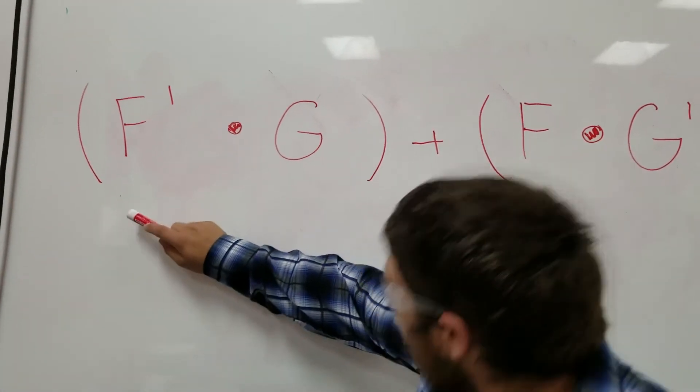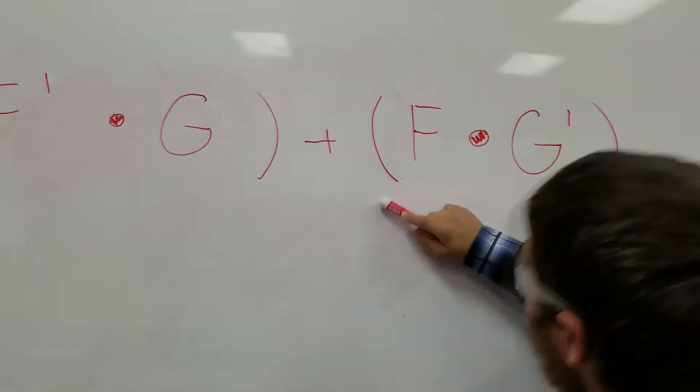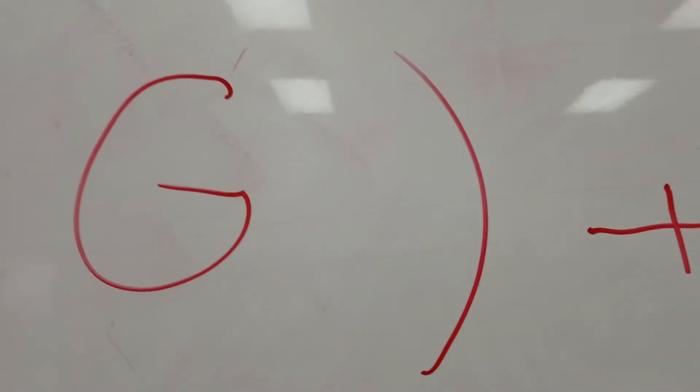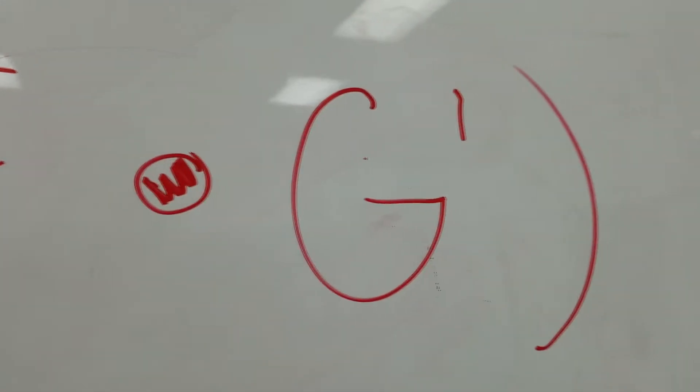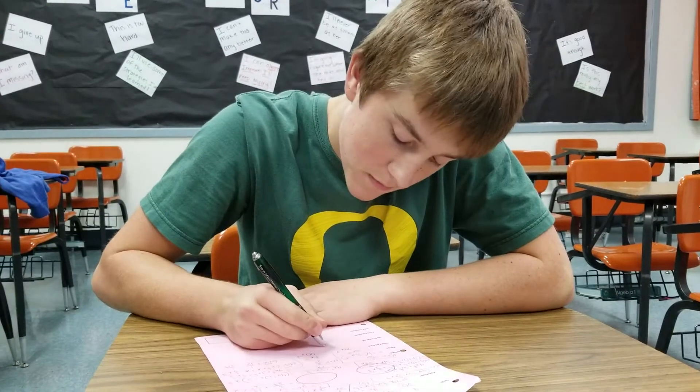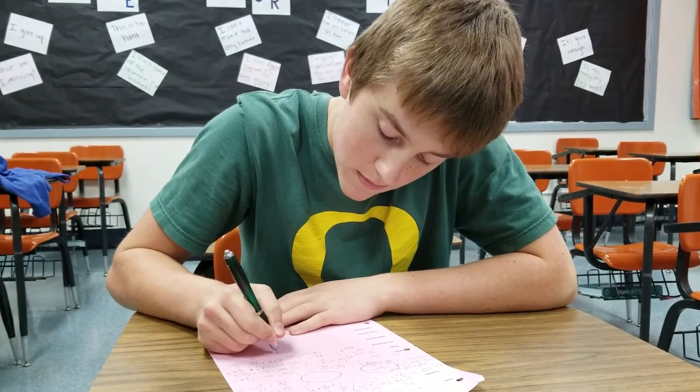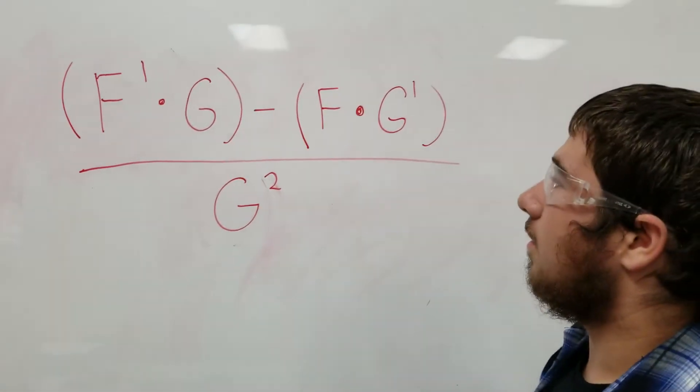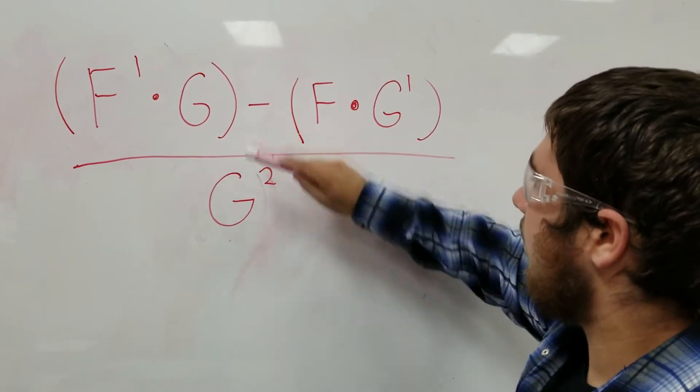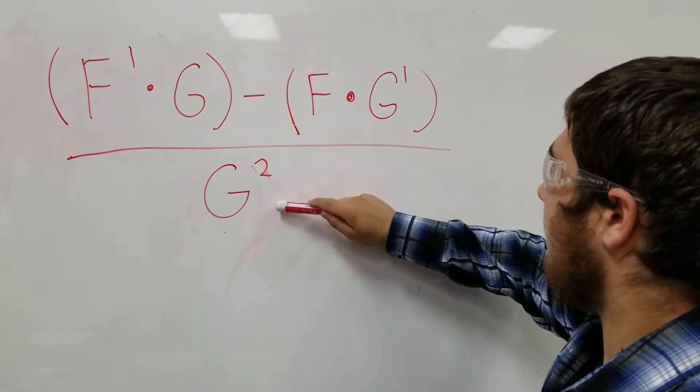And there's the product rule, it's our multiplying tool. f prime times g plus the f times the g prime. Solve it, then factor, then you'll be fine. But when there's a fraction, then you'll use subtraction. Divide by the g squared,